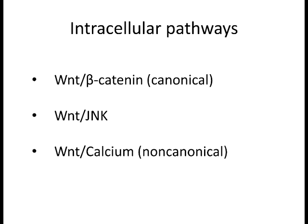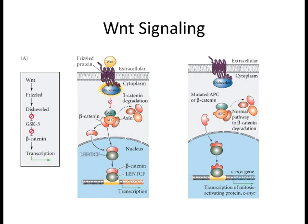There are many Wnt ligands and many frizzled receptors. The overall morphology of the receptor is a seven-pass transmembrane protein. Here's the basis of how it works. The Wnt ligand secreted by the inducer hits cells with the frizzled receptor. Attached to this frizzled receptor is a protein called disheveled—normally disheveled will not be released from frizzled; as long as the Wnt ligand is not there, they stay together.